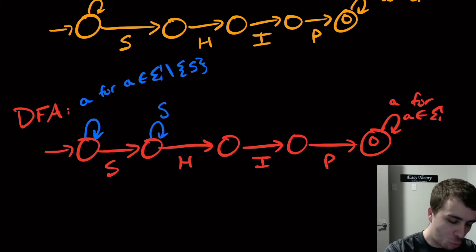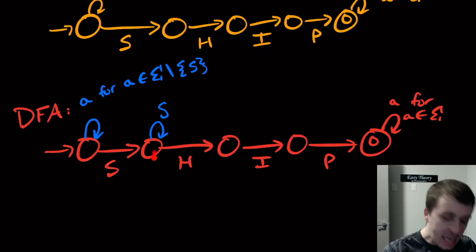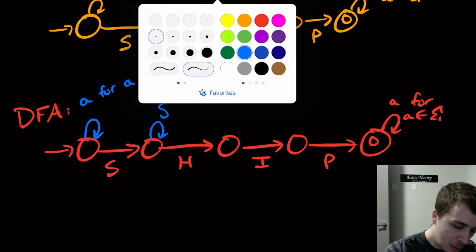Then here in this state we're going to have a self-loop on S. Why S here? Because this state is representing we just saw S—the last thing that we saw was an S. So if we read another S, the last thing we saw was an S. And then if we see anything other than S here, we should go back here because we want to start over again. I mean, anything other than S and H, because if we see H we are going to go here obviously.